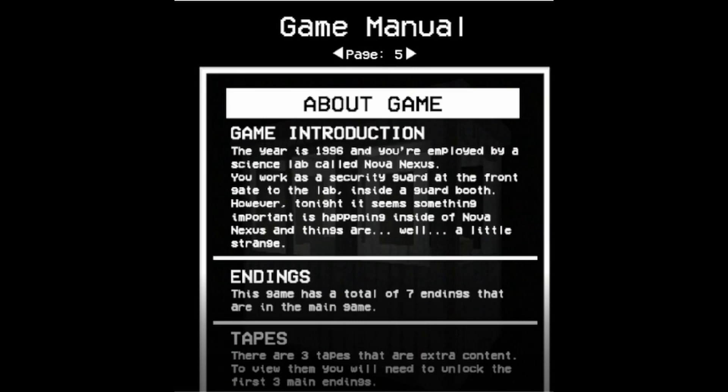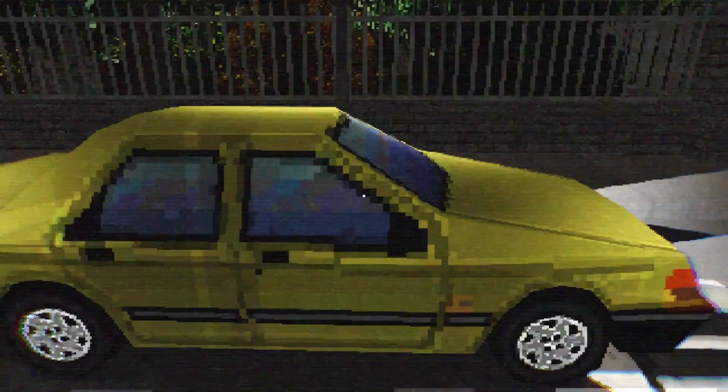The game starts out with a little description. The year is 1996. You're employed by a science lab called Nova Nexus. You work as a security guard at the front gate inside a guard booth. However, tonight seems something important is happening, and things are, well, a little strange.